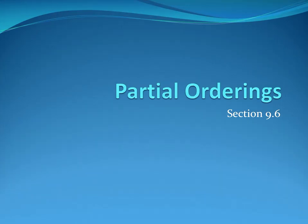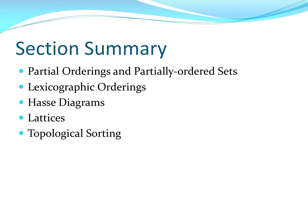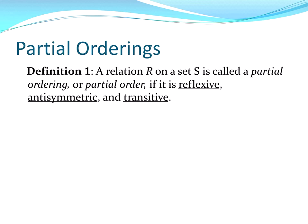This is Rosen section 9.6 on partial orderings. Partial orderings are a type of relation on a set. A partial ordering is a relation R on a set S — that is, from S to S — if it is reflexive, anti-symmetric, and transitive. If it has those three properties, it is a partial ordering.